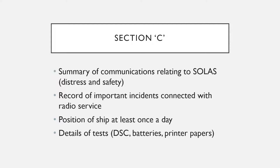Section C also contains a record of any important incidents connected with radio service. Importance can be subjective, but the rule of thumb is: if you consider something important, or if you are ever in doubt, just put it in the GMDSS radio logbook. For example, if you receive a distress call and your ship is too far to assist — as mentioned in the master's standing orders — and you have provided a message to the Rescue Coordination Centre that you received the distress message and the ship was too far to assist, record that in the GMDSS radio logbook.